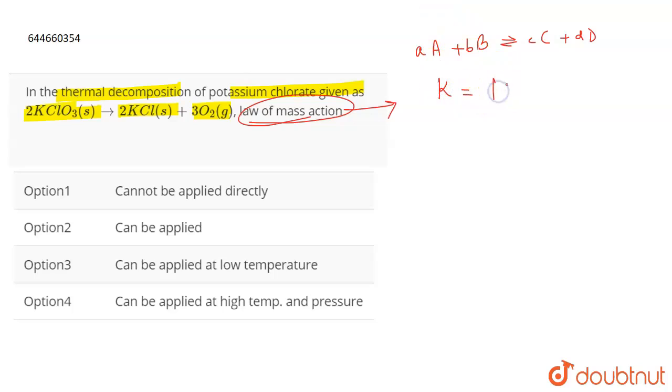the concentration of the products, each raised to their stoichiometric coefficient, divided by the concentration of the reactants, again each raised to their stoichiometric coefficients. So basically we can find out the equilibrium constant for a reaction using this law of mass action, which is the concentration of products divided by the concentration of the reactants.